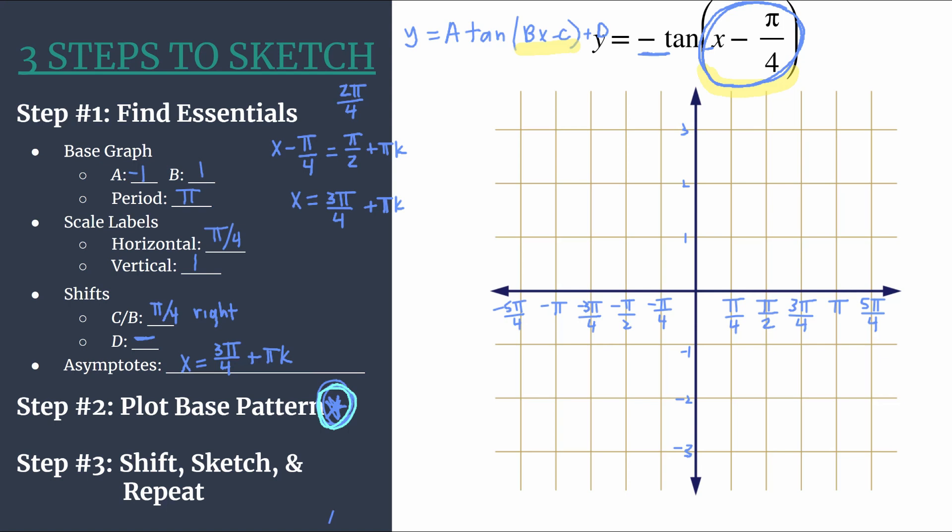Instead of the characteristic tangent graph like that, it'll be reflected like this. So lightly, let's go ahead and plot one cycle of our graph before shifts. We'll start with our zero at the origin. I'm just using light blue as my light color.